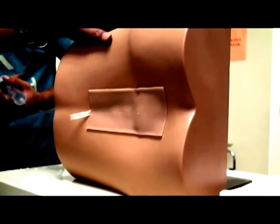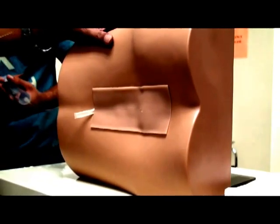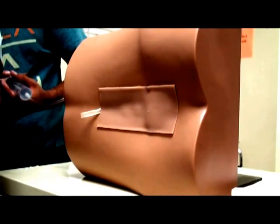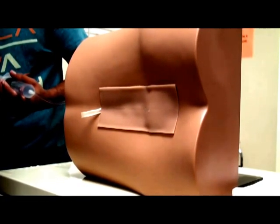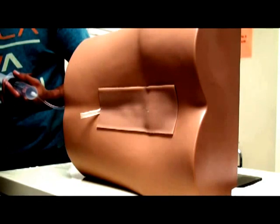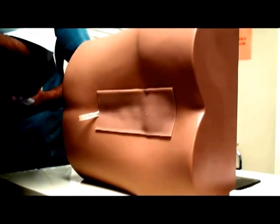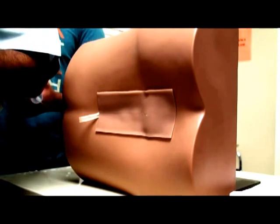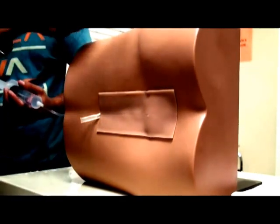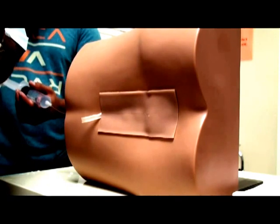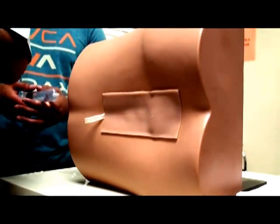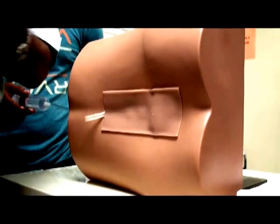Before that, one more thing I need to tell you. Once we have entered the spinal canal and we are seeing CSF, we are sure that we have entered the spinal canal. Still, sometimes CSF may not come out. Sometimes what happens is a small filament of arachnoid trabeculae may block the opening. Then there are two or three things that we can do to make the CSF come out. In an actual living situation, we can ask the patient to cough gently. That way it increases the intraspinal pressure and CSF starts coming out.